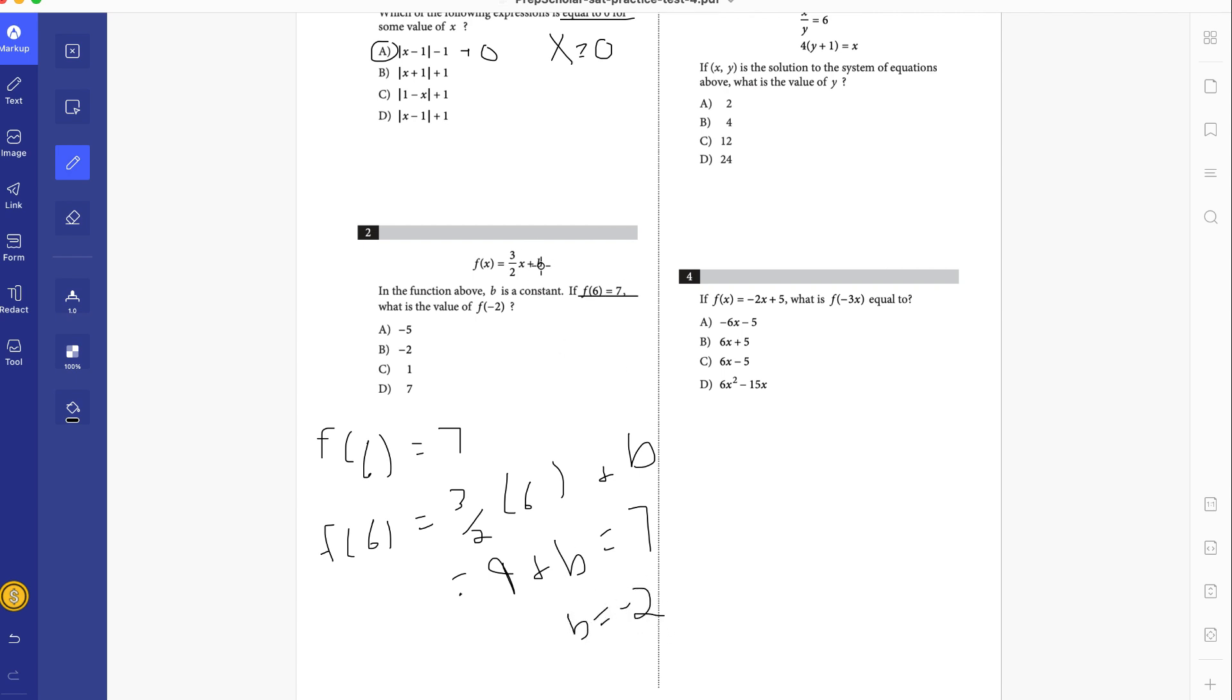Alright, so now we know that this is actually minus 2. See how nice it is to just be able to write right over it? Minus 2. So value of f of negative 2 would be 3 times negative 2, which is negative 6, divided by 2, minus 2. So that's negative 3 minus 2, which is negative 5, A.